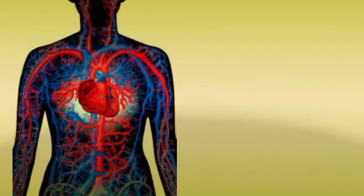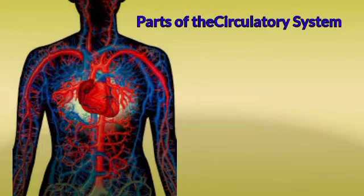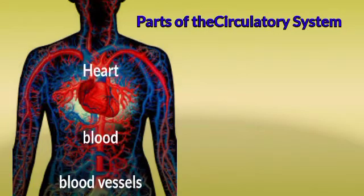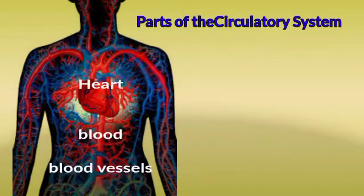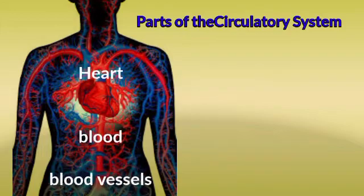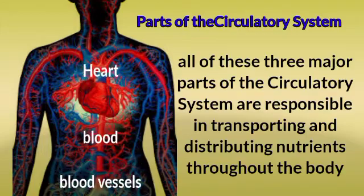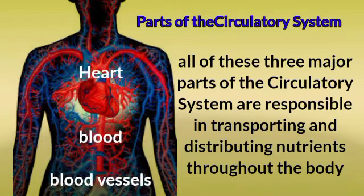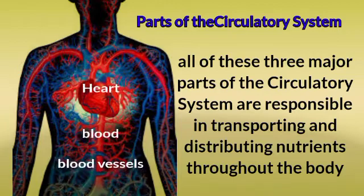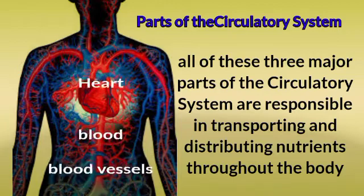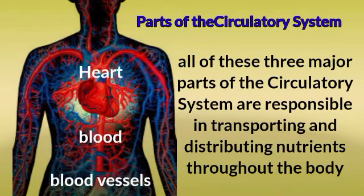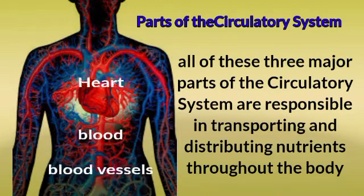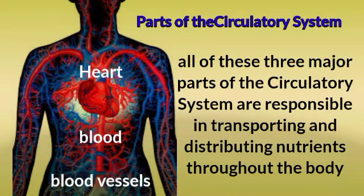The circulatory system is an amazing highway that travels through your entire body, distributing materials to all body cells. There are three major parts of the circulatory system: the heart, the blood, and the blood vessels. All three are responsible for transporting and distributing nutrients throughout the body.